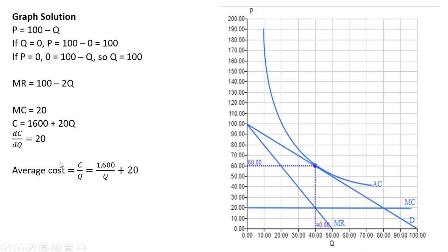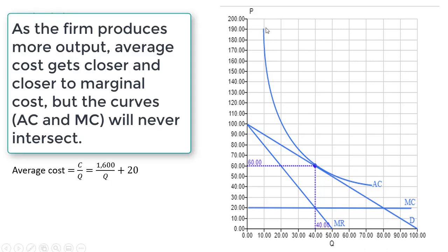The next thing to graph is average cost. Average cost is the cost equation divided by the quantity of output. So 1,600 divided by Q and 20Q divided by Q is just 20. And you'll notice here if Q is very small, average cost will be very big. So if Q is 10 for example, average cost would be 180. On the other hand, if Q gets bigger and bigger, average cost gets smaller and smaller. So if Q is for example 1,600, average cost would be $21. So you get this nice downward sloping curve here for the average cost equation.